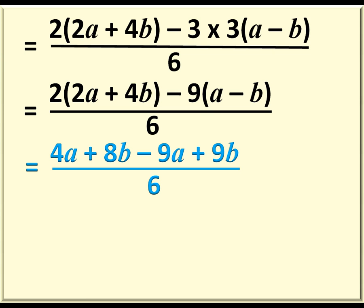Now let us do away with the brackets, and that is 2 times 2A equals 4A, 2 times 4B equals 8B, negative 9 times A equals negative 9A, and negative 9 times negative B equals positive 9B.